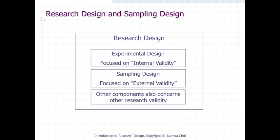So far, we learned various techniques to increase or warrant research validity, mostly focusing on internal validity. In this lecture, we will focus on external validity of research. As a particular component of overall research design, sampling design concerns external validity issues, in other words, generalizability. Therefore, experimental design concerns internal validity and sampling design concerns external validity.